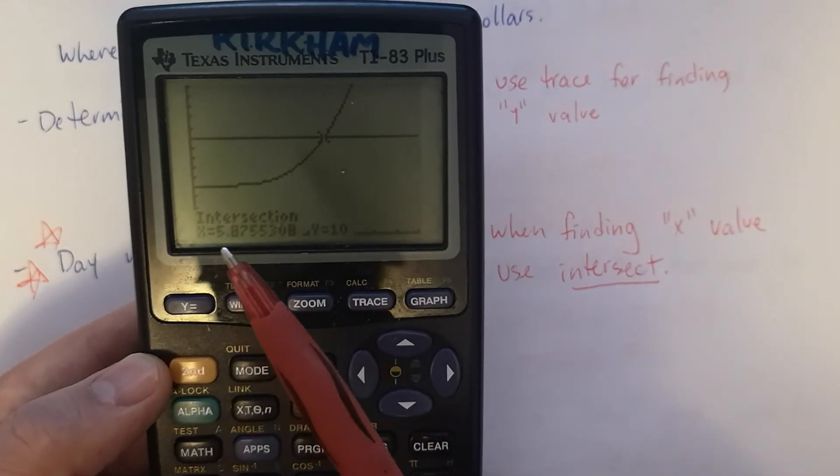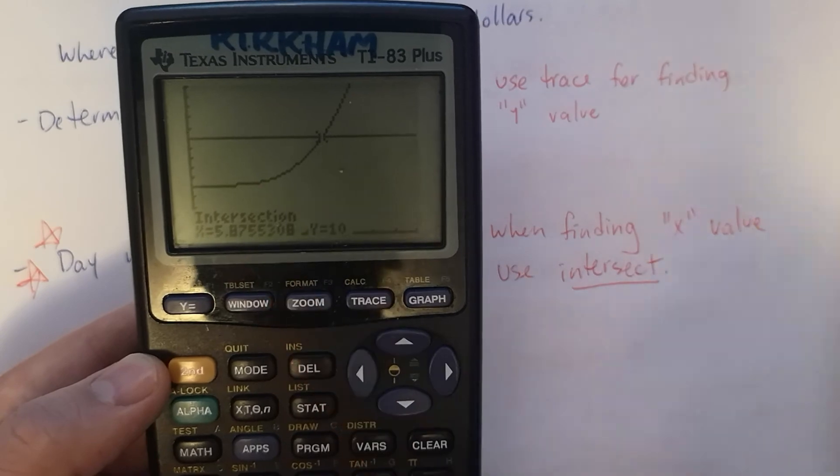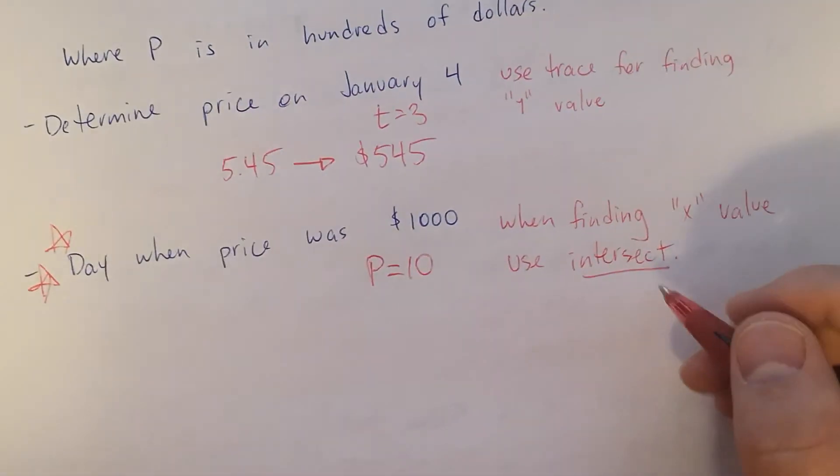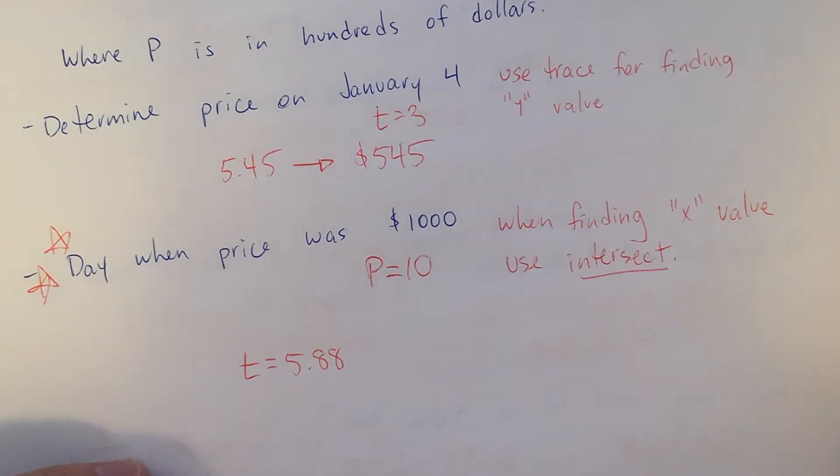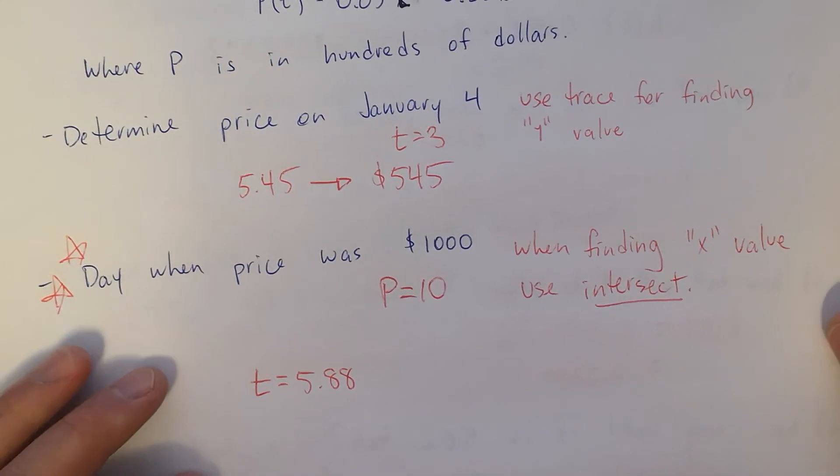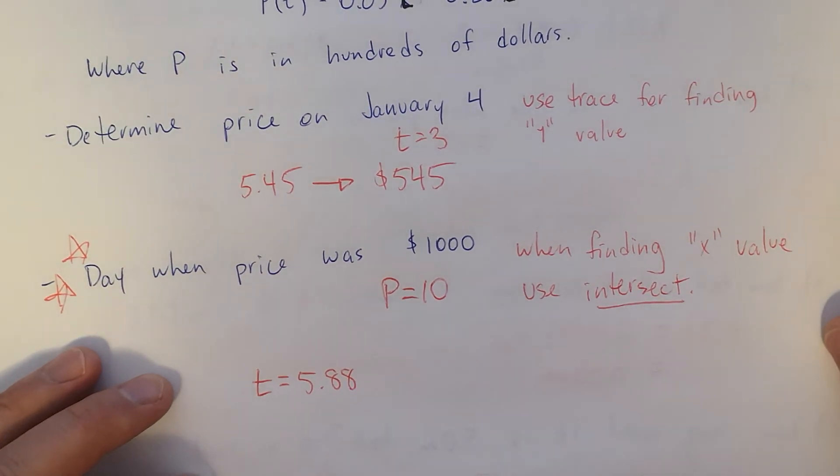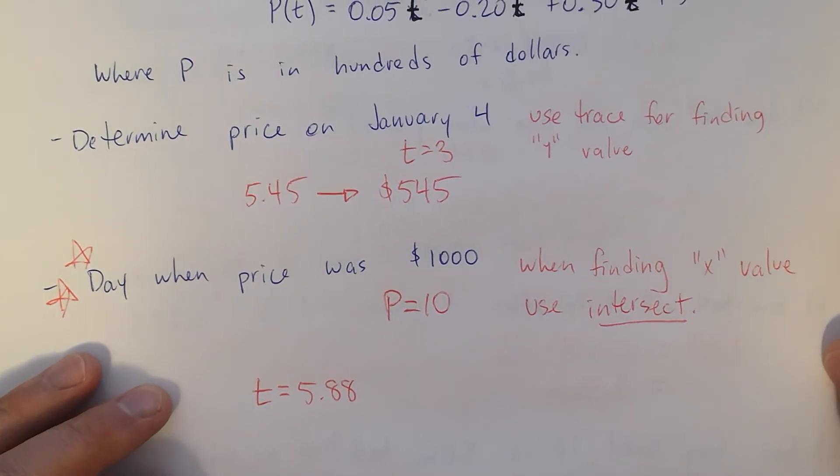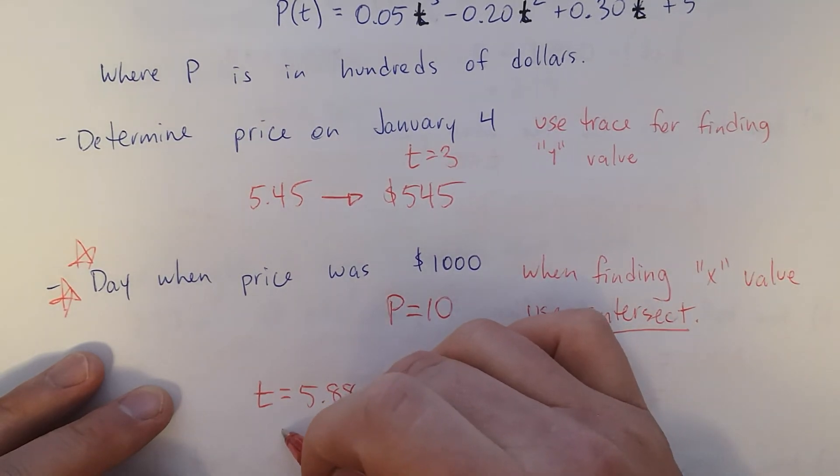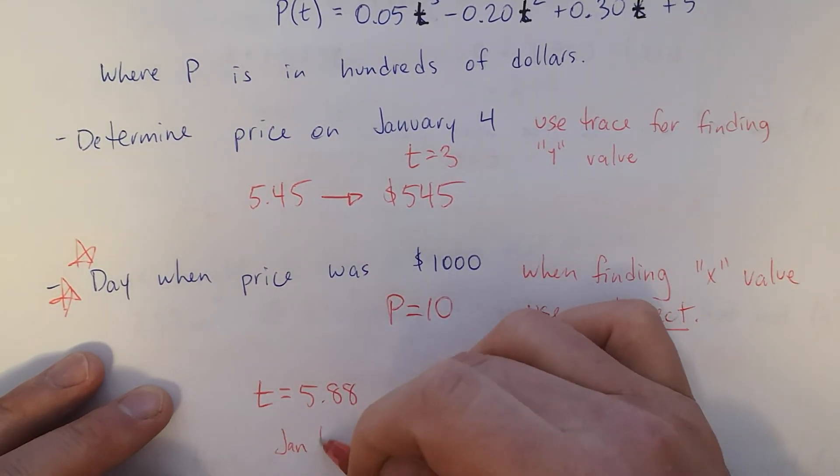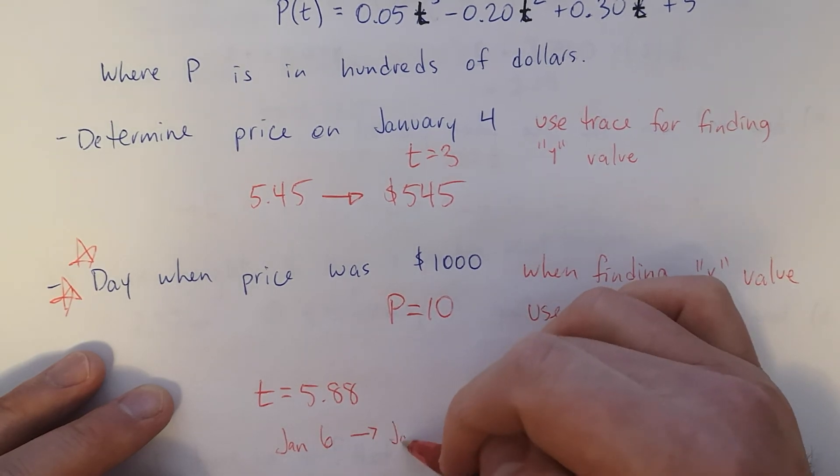All right. So we're looking for this x value. 5.8. That'll round to an 8, which doesn't really matter. What we got was t equals 5.88. Okay. That is days after January 1st. All right. So when would that be? I think that's going to be late in the day of January 6th, or you could even say January 7th.